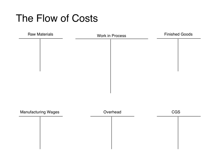Recall this from your principles two class or your managerial accounting class. The first three accounts you see here on top are raw materials, work in process, and finished goods. These are your three inventory accounts if you're a manufacturing company. Since these are inventory accounts they're going to start with a beginning balance on the debit side, and they carry a normal debit balance with an ending balance also on the debit side.